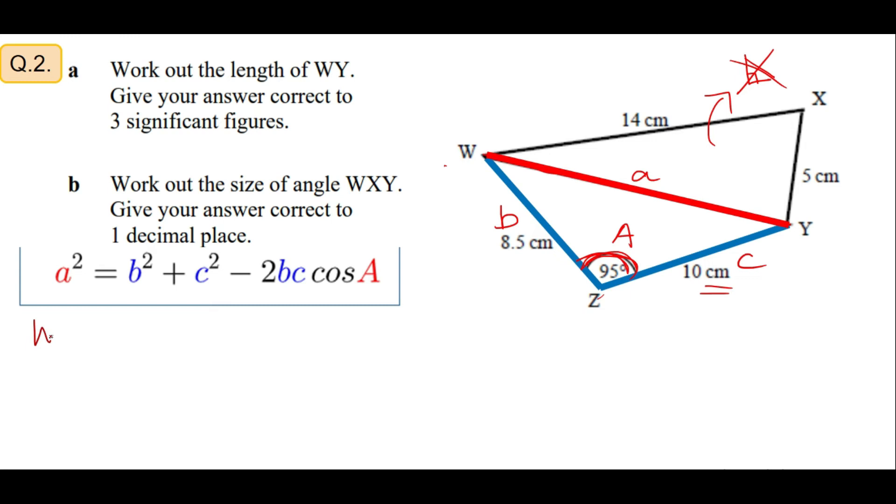Starting with a squared, so my a is WY squared equals 8.5 squared plus my c is 10 squared minus, so whenever you have this minus open up bracket and write this part inside the bracket: 2 times 8.5 times 10 times cos of the angle A which is 95 degrees and then you close the bracket. So when you use the calculator you can just put this whole sentence or type all this value in a single sentence in your calculator.